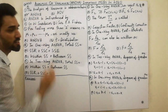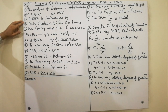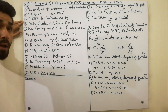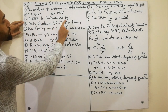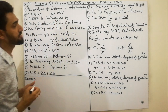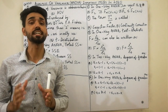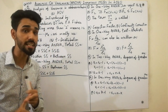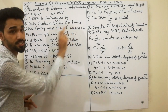Moving to the second MCQ, which is very important. You must remember that ANOVA is introduced by R.A. Fisher. So must remember that key point: ANOVA is always introduced by Fisher.